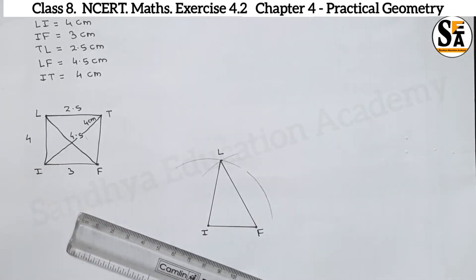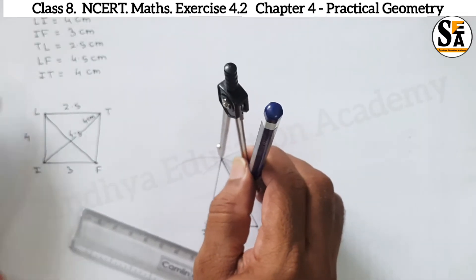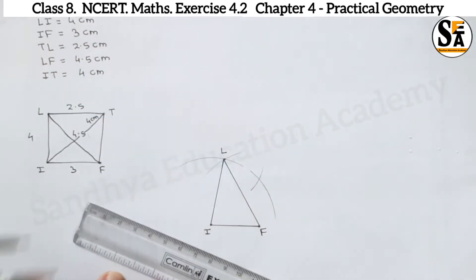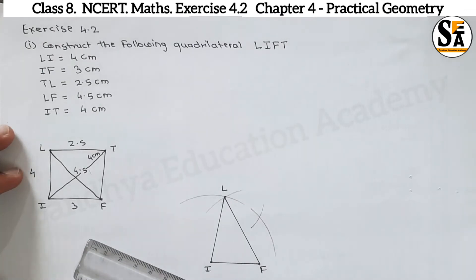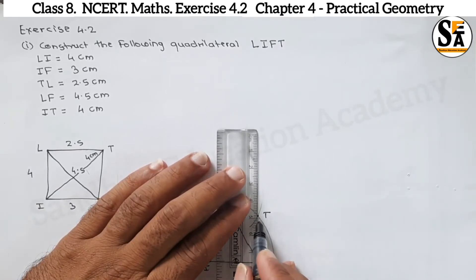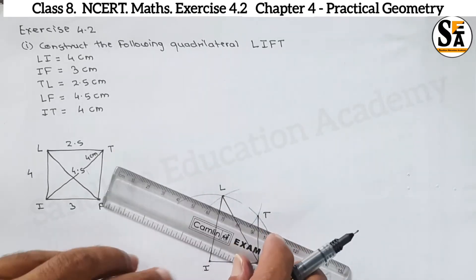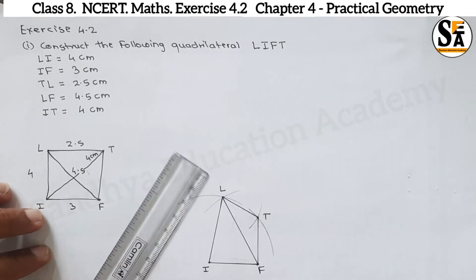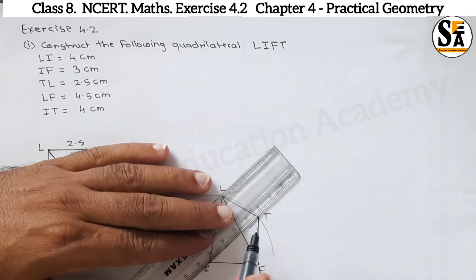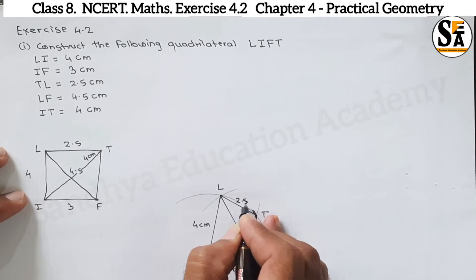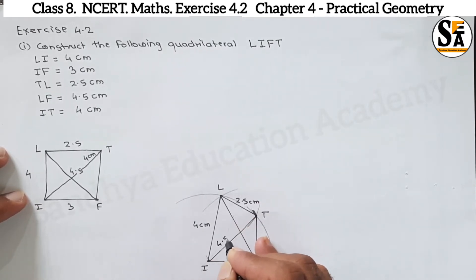Make an arc of 2.5 cm from point L. The intersecting point is point T. Join TF and also join LT. Thus we got quadrilateral LIFT with dimensions: LI = 4 cm, IF = 3 cm, TL = 2.5 cm, diagonal LF = 4.5 cm, diagonal IT = 4 cm.